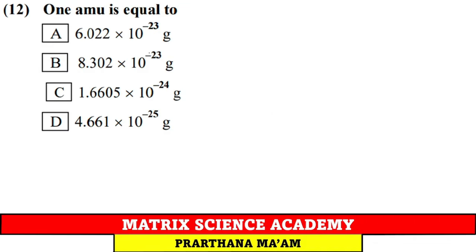Question 12: 1 AMU = 1.66056 × 10⁻²⁴ gram — note this fancy number.